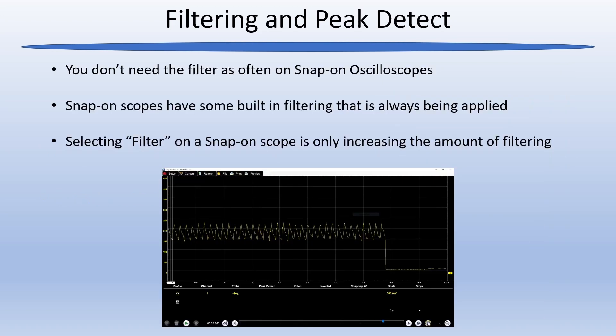Snap-on scopes have some built-in filtering that is pretty much always in effect, except when you're using Peak Detect. Because of this, you don't need to use the filter option as often as you do with a Pico. If you do filter, you're really just increasing the amount of filtering already present. That's why snap-on captures look much cleaner than Pico captures.